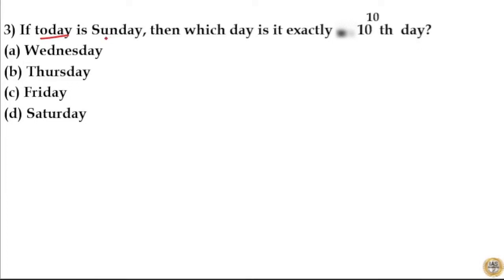So if today is Sunday, then which day is it exactly 10 to the 10th day? If today is Sunday, that means the 7th day will be Sunday, the 14th day will be Sunday. Again, the 21st day will be Sunday. That means after every 7th day will be Sunday.